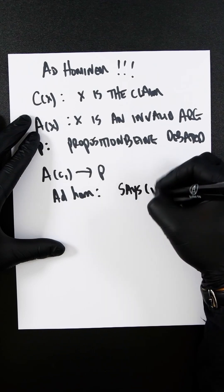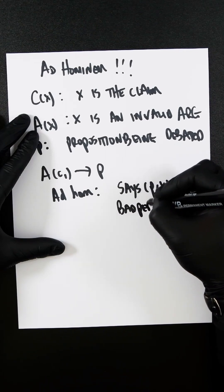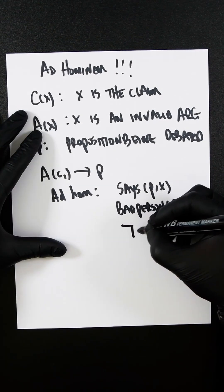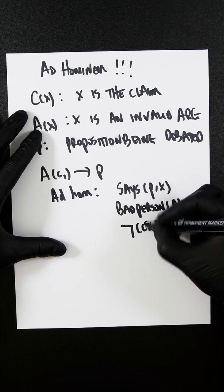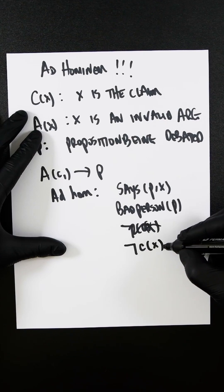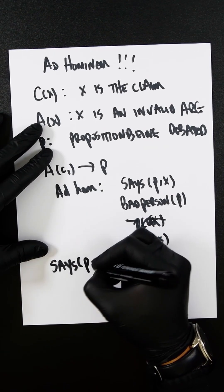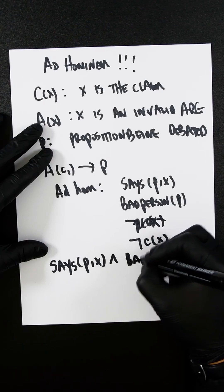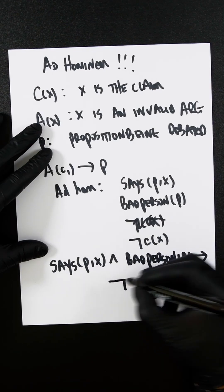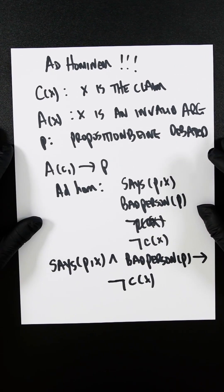But the ad hominem — attacking the person — exists where we have: person P claims x, the person has a negative characteristic (bad person), and therefore not C(x), meaning claim C is invalid. So the ad hom works as: person P says x, and bad person P, therefore not C(x).